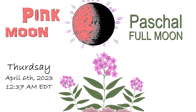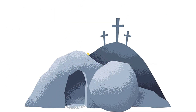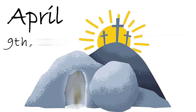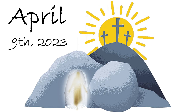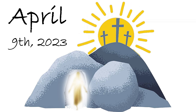The first Sunday after this glorious full moon happens to be April 9th, thus Easter Sunday is April 9th this year — and that's how we get the date for Easter.